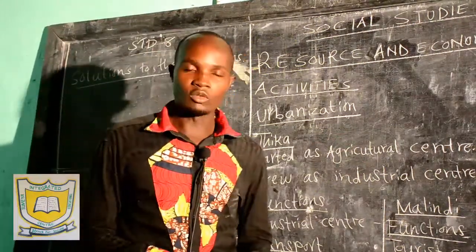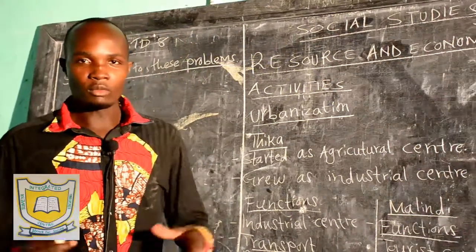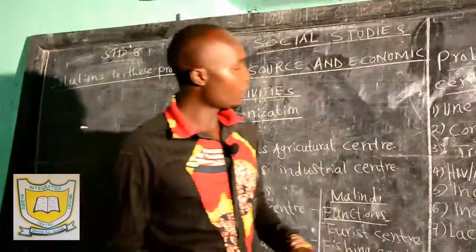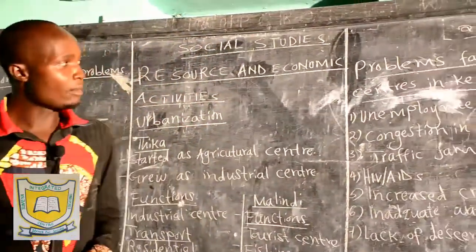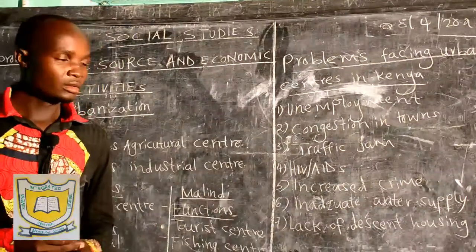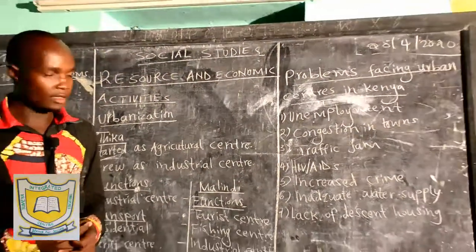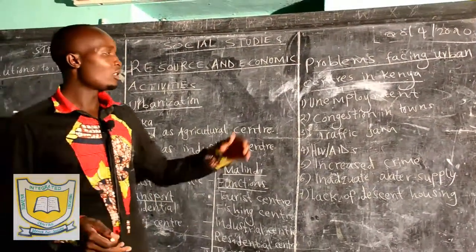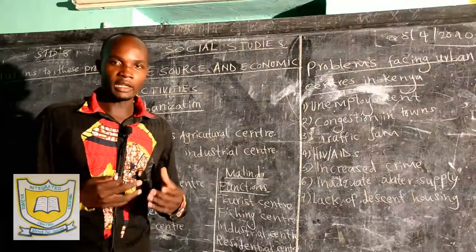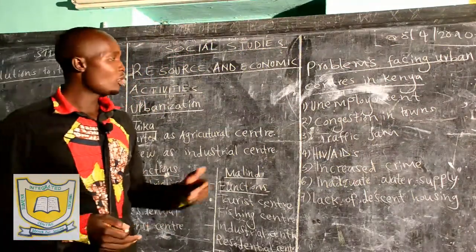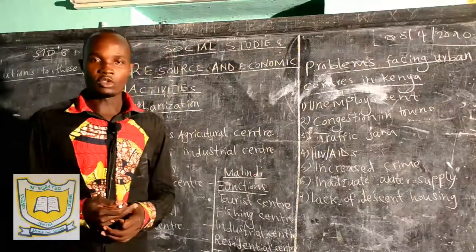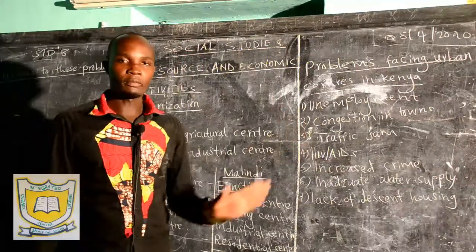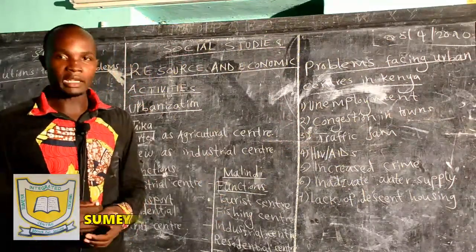We shall have finished discussing about towns. Now we want to look at the major problems that face these towns. Problem number one is unemployment — unemployment is the lack of job opportunities. We know very well that young people, after getting education, need to be employed. Many young people move to town hoping to get employment, but because of scarcity of jobs it becomes a problem. Unemployment is where most people do not have jobs, and that is a problem in urban areas.